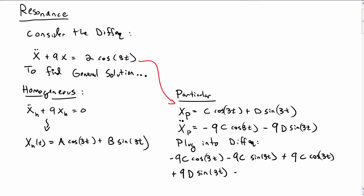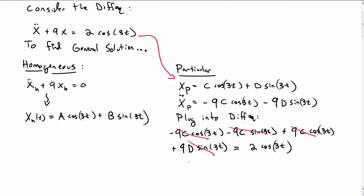And then 9x equals 2 cosine of 3t. Canceling terms, I find the surprising result that 0 equals 2 cosine of 3t.